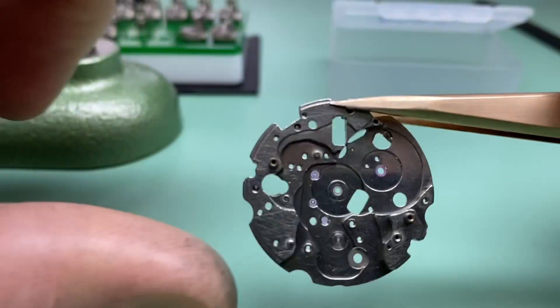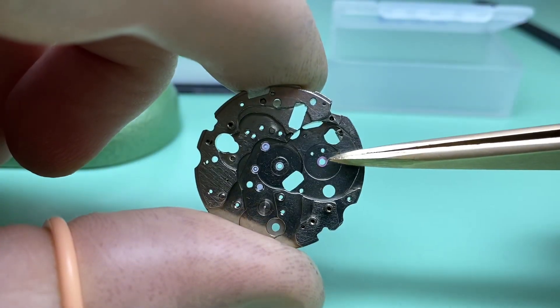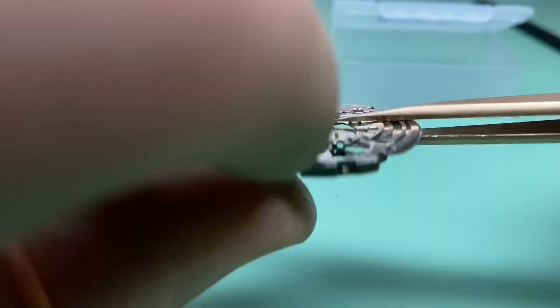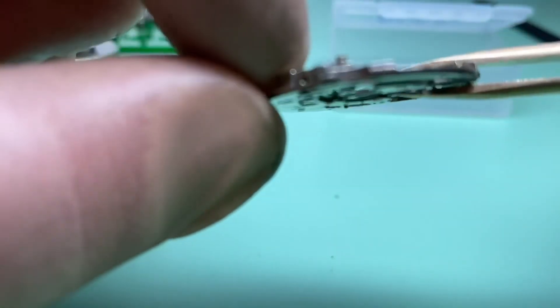Once that's done, the jewel upgrade is complete. We can check, get our barrel and we can check. Obviously we need to check our end shake.